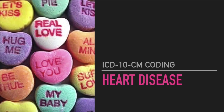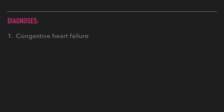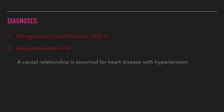Today we're going to talk about ICD-10 coding in relationship to heart disease — specifically heart disease with hypertension. Say you have a patient and their diagnosis is congestive heart failure, unspecified, and hypertension. You might be tempted to code the primary diagnosis as I-50.9 and the secondary as I-10 for hypertension, but that would be wrong. There is a causal relationship assumed when a patient has heart disease and hypertension — the assumption in ICD-10 is that the heart disease is caused by the hypertension.